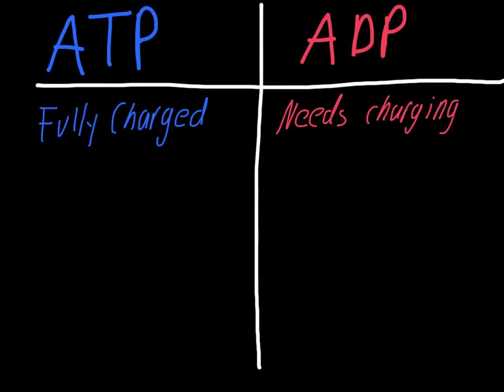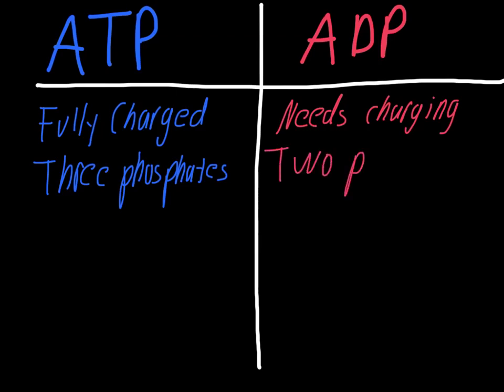ATP has three phosphates, and ADP only has two — that's the main difference in their names. They do have things in common: they both have the adenine and the ribose in their general structure. Basically, the simple thing to understand is that ADP is partially charged, and the whole point of photosynthesis and respiration is to eventually end up making ATP for the cell, because ATP powers absolutely everything going on. If you can label a simple diagram with the parts and understand the difference between ADP and ATP, you should be all set.